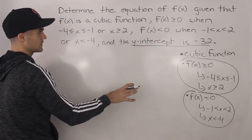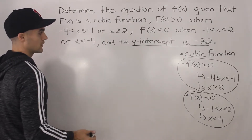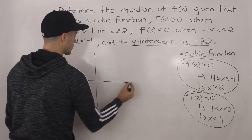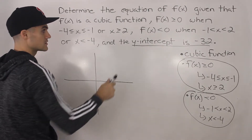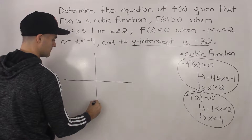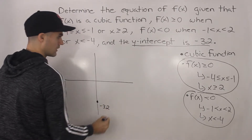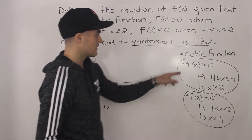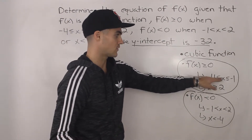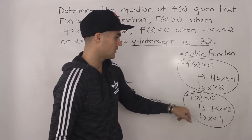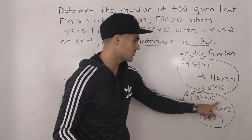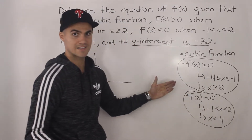So we have to take this information and make a possible equation of f of x. My suggestion is instead of trying to make the equation right away, first graph this. The y-intercept is negative 32, so that's down here. Notice that they tell you f of x is greater than or equal to 0 when x is between negative 4 and negative 1, and when x is greater than 2. These numbers come up again.